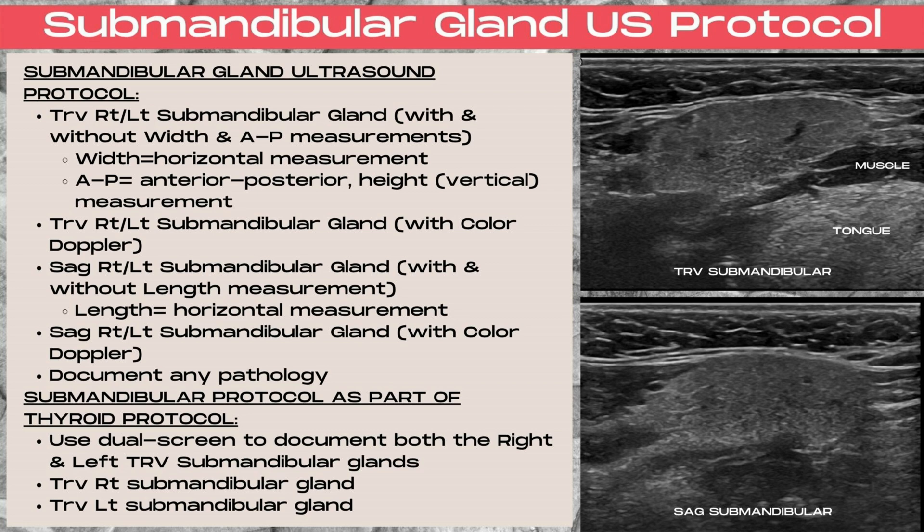Next, move to the sagittal plane — a sagittal right and left submandibular gland with and without length measurements. Note that length is a horizontal measurement on the ultrasound. Then sagittal right and left submandibular glands with color Doppler as well.